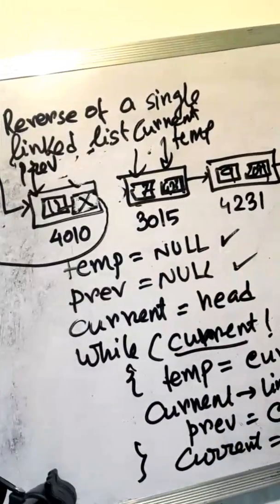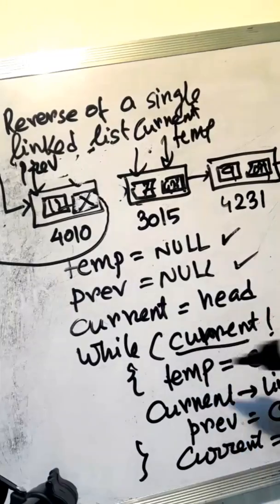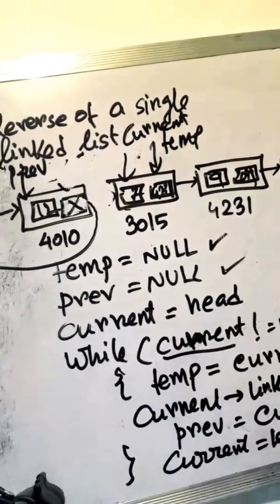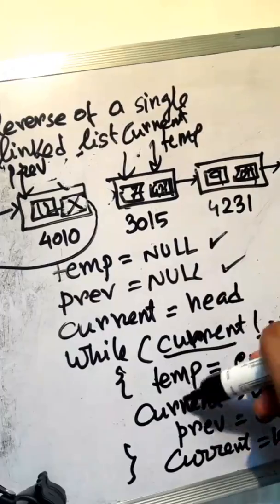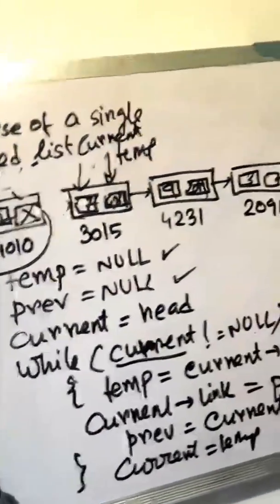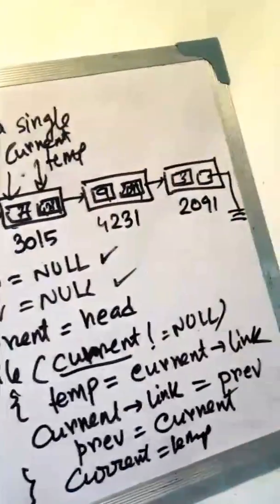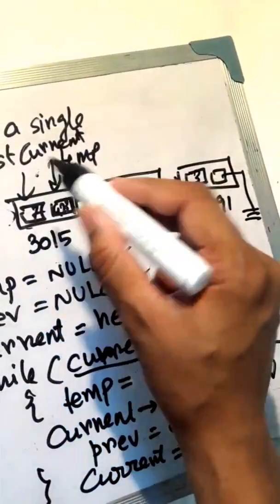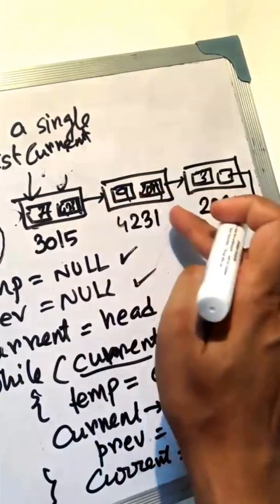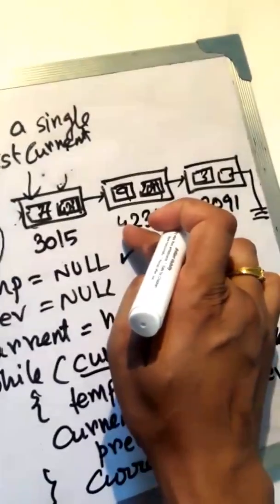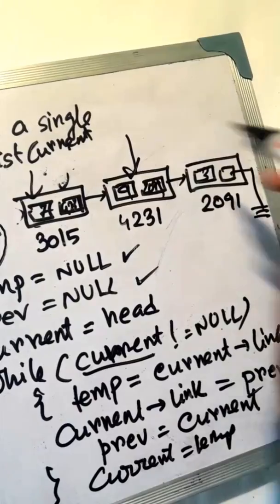From address 3015, we move current to the next node. This is the current pointer link — the current link. The current pointer link value is 4231.